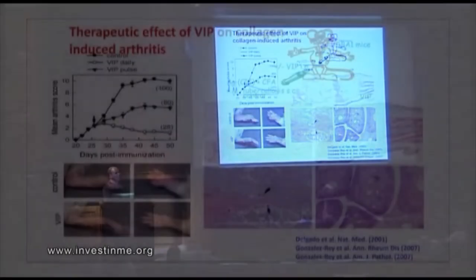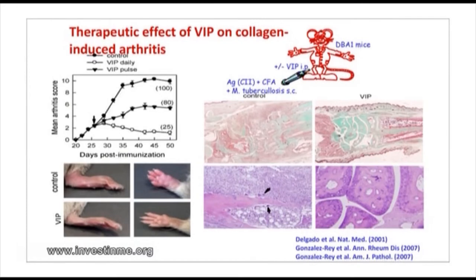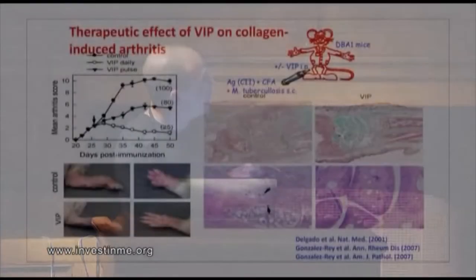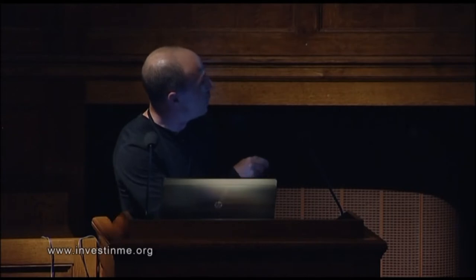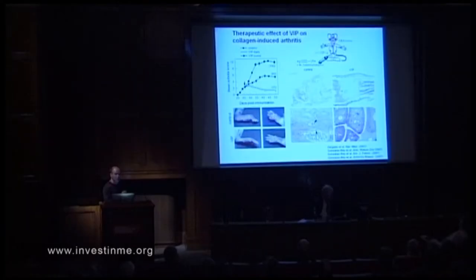In a model of rheumatoid arthritis induced by collagen type 2, all untreated animals show different clinical scores of disease, characterized by typical joint inflammation in all paws and destruction of bone and cartilage. A single administration of VIP over five days inhibits the progression of the disease. The paws look completely different from untreated animals, and at the histological level there is preservation of the joint.